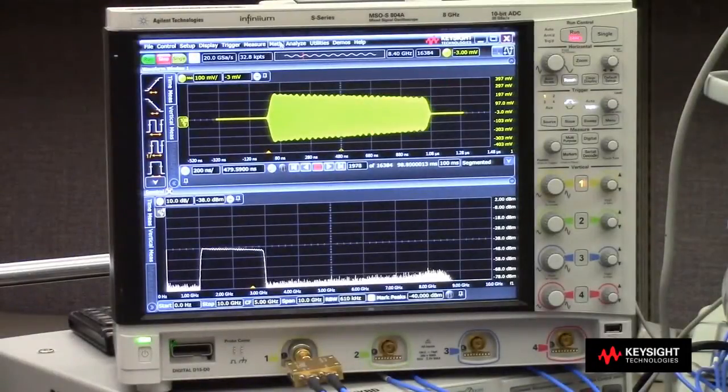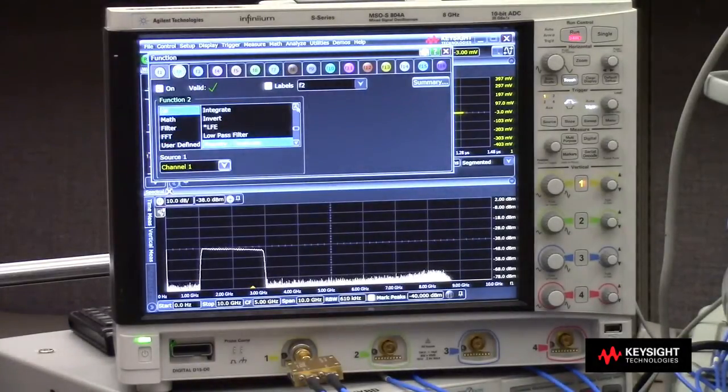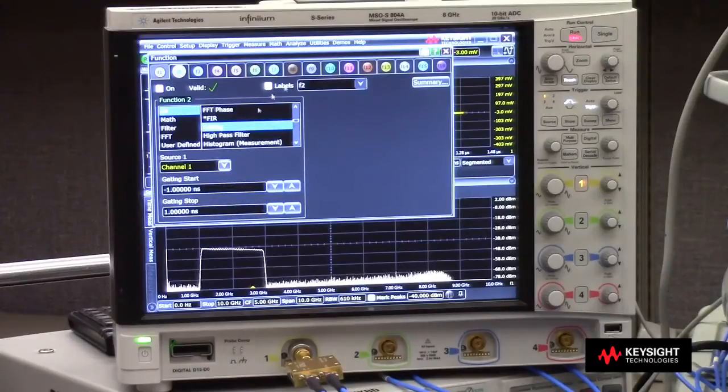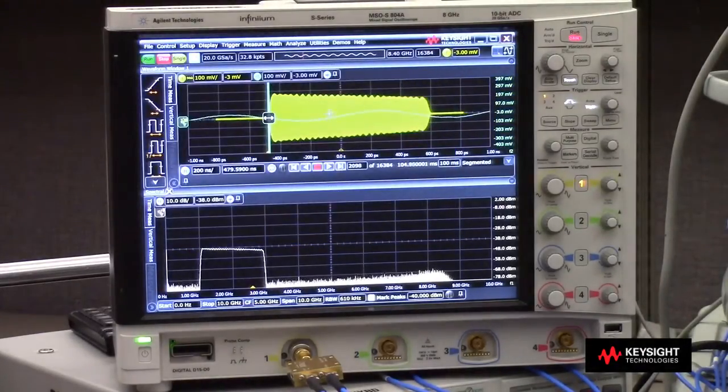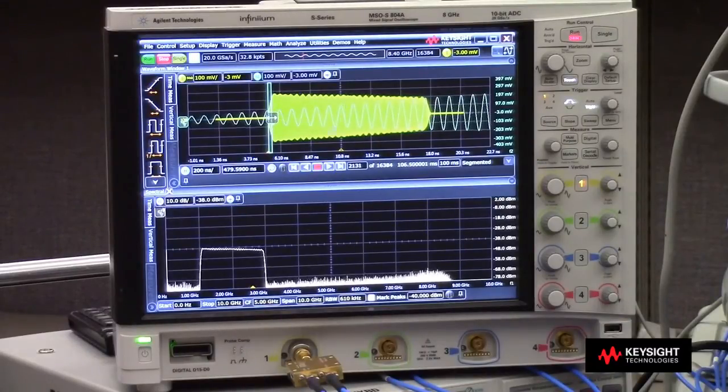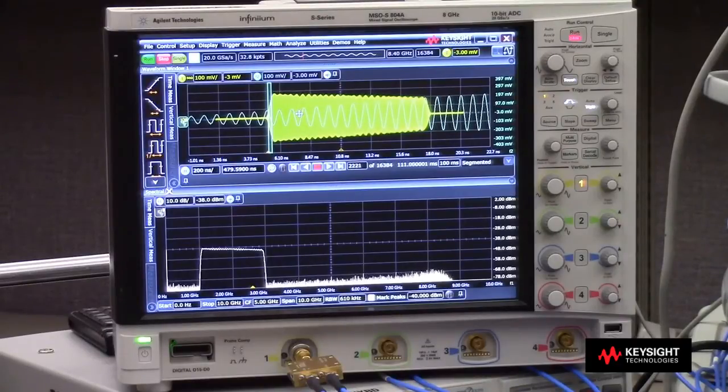Back on the oscilloscope, we'll define another math function called gate. We'll turn that on. And now I have a little time gate riding on my RF pulses that I can move across the pulse and do analysis. I could have also, if I had multiple pulses on screen, gated those individual pulses and done FFTs on them.